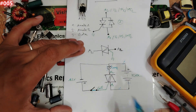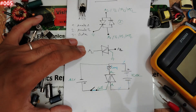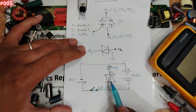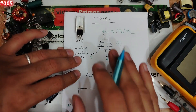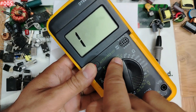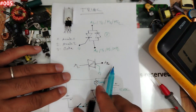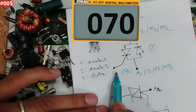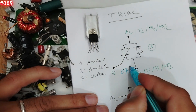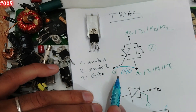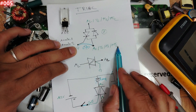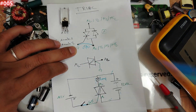The triac has the same working principle as a transistor, but testing is different. We use the diode option on the multimeter. A good triac will show around 0.70 volts drop between the gate and anode one — the same whether you call it T1, M1, or MT1.